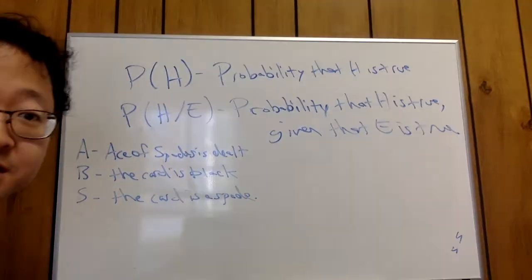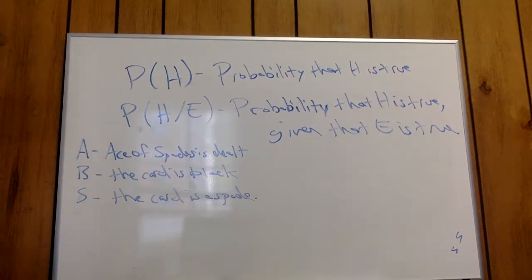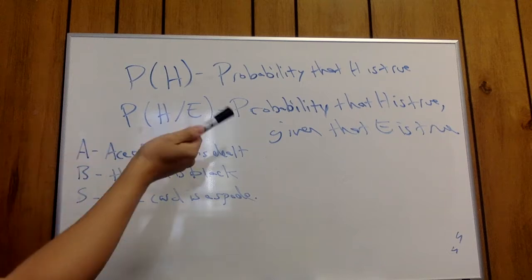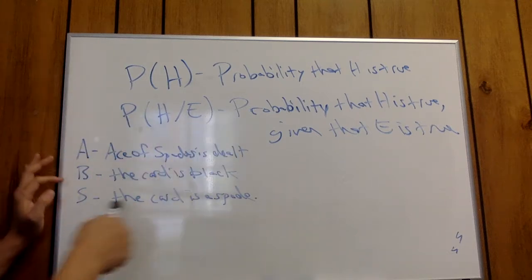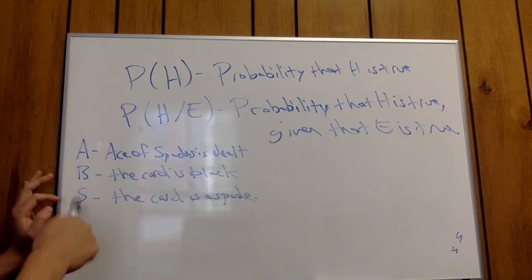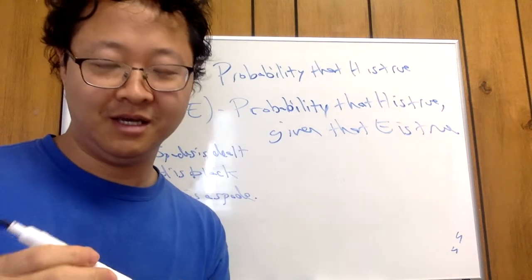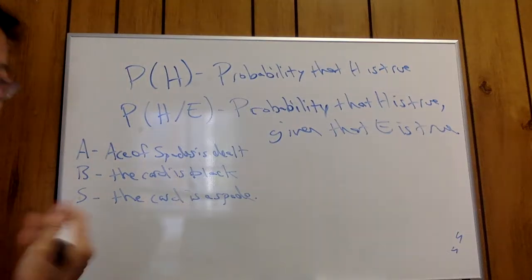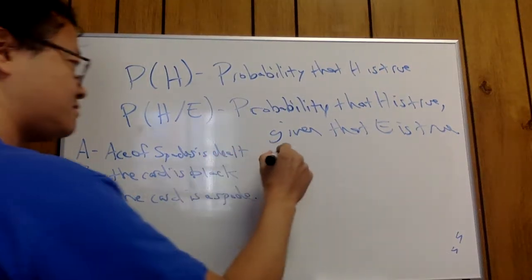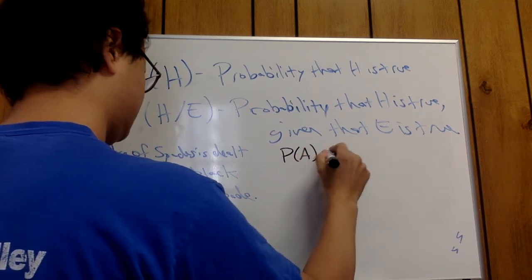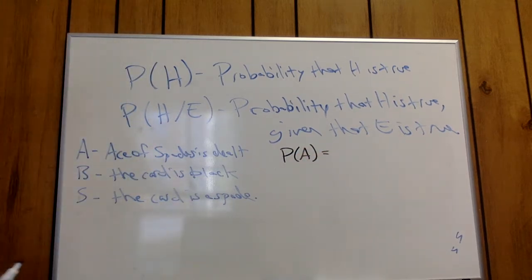Okay, I hope you can all see that. I think my marker's already dying a little bit. All right, so here I just picked a random, like the letter A stands for the ace of spades is dealt, B is the card is black, S is the card is a spade. So what I'm going to ask you to do is try to figure out some probabilities. So what's the probability of A? So somebody deals a hand. What's the probability that the ace of spades is dealt?